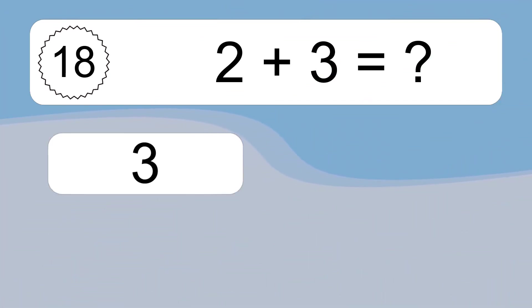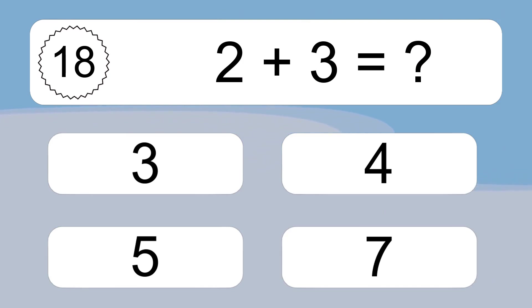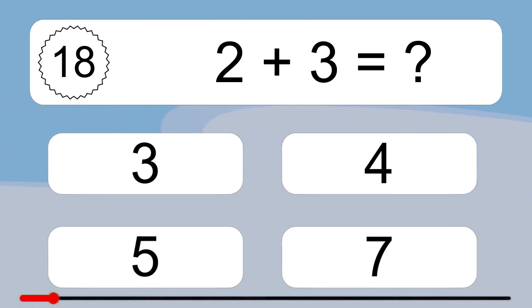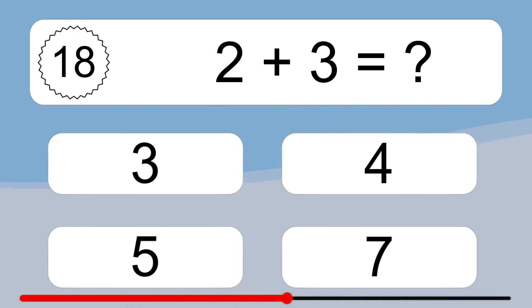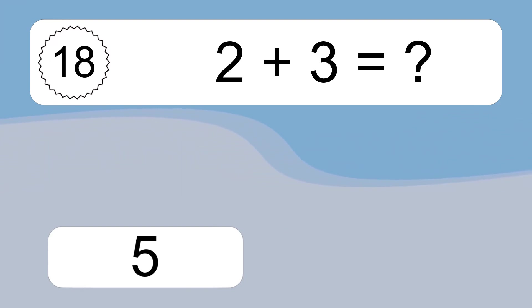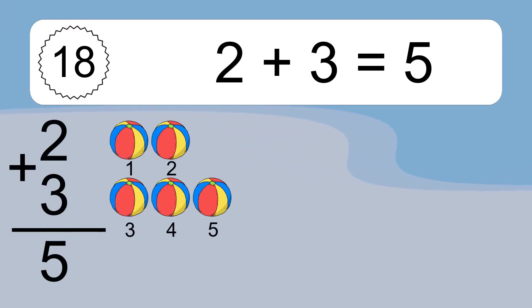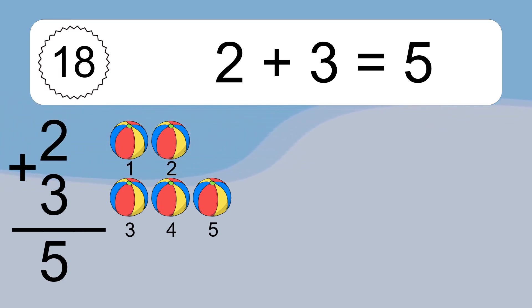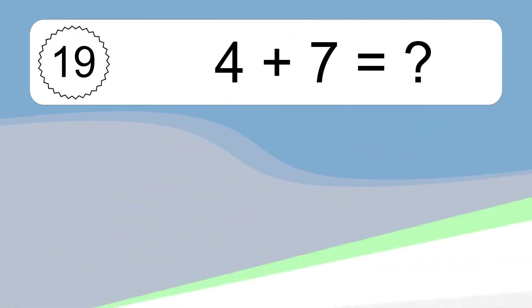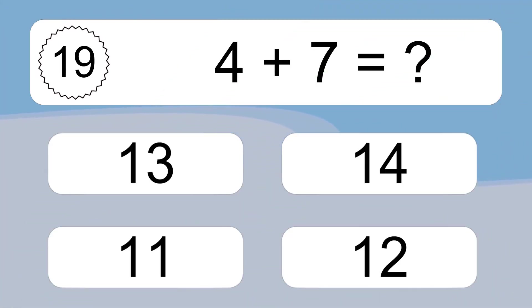2 plus 3 equals what? 2 plus 3 equals 5. Let's count it. 1, 2, 3, 4, 5.